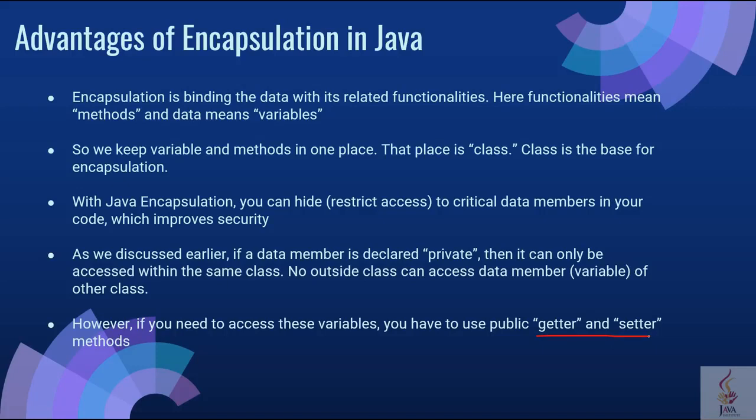Getter and setter methods are two conventional methods used to retrieve and update values of a variable. They are mainly used to create, modify, delete and view the variable values. The setter method is used to update the values and the getter method is used for reading or retrieving the values. They are also known as the accessor and the mutator.